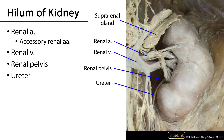The hilum of the kidney is an area where neurovasculature enters and exits, and it includes several major elements. There's the renal artery, which divides into various segmental arteries within the hilum. There may also be accessory renal arteries serving the hilum. There is the renal vein within the hilum, and the renal pelvis, which is contiguous with the ureter within the hilum. Moving more laterally, the hilum is contiguous with a space called the renal sinus, which is surrounded by the parenchyma of the kidney.